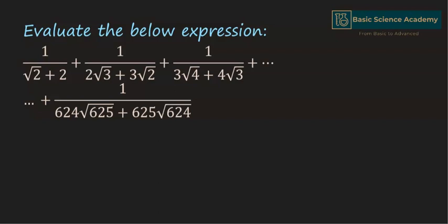In this video, we are going to evaluate the expression 1 divided by square root 2 plus 2, plus 1 divided by 2 square root 3 plus 3 square root 2, plus 1 divided by 3 square root 4 plus 4 square root 3, up to 1 divided by 6⁴ square root 6⁵ plus 6⁵ square root 6⁴.